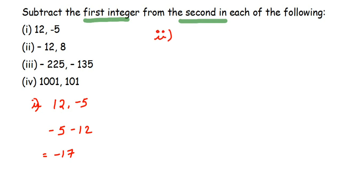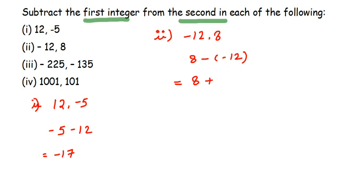The next one: we have -12 and 8. Subtracting gives us 8 minus (-12). The two negatives multiply to give a plus, so it becomes 8 plus 12, which equals 20.